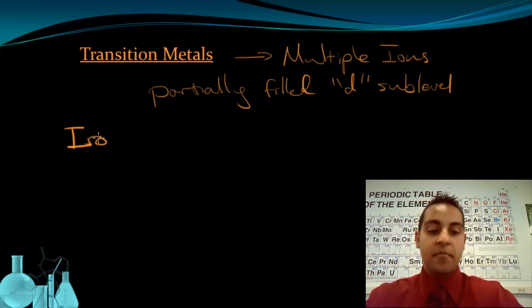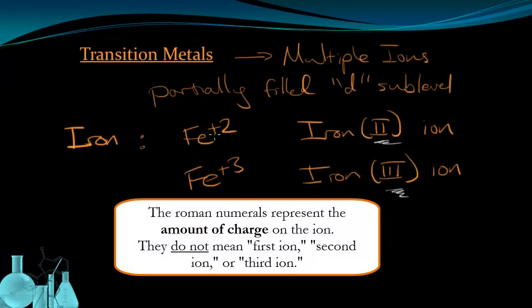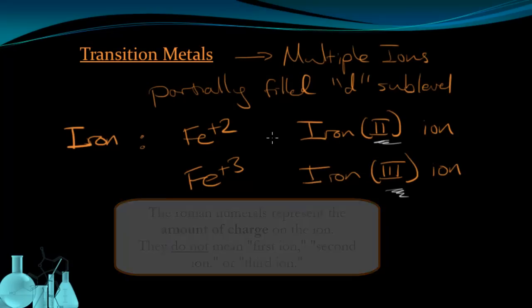Let's look at iron. Iron can form two different ions. It can have the Fe2+ ion, or it can make the Fe3+ ion. And because there are two different options, we have to name them as such. So the first one is called the iron (II) ion. The next one is the iron (III) ion. You can notice that the Roman numeral after the name indicates the charge of the ion. The Roman numeral indicates the charge of the ion.